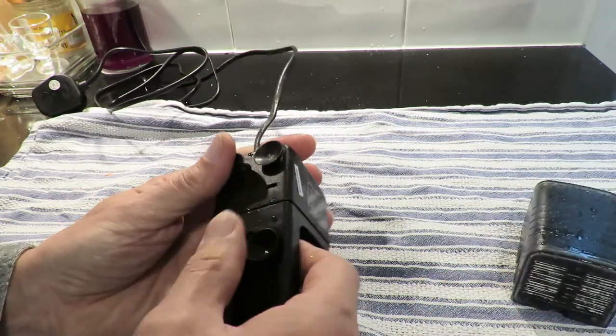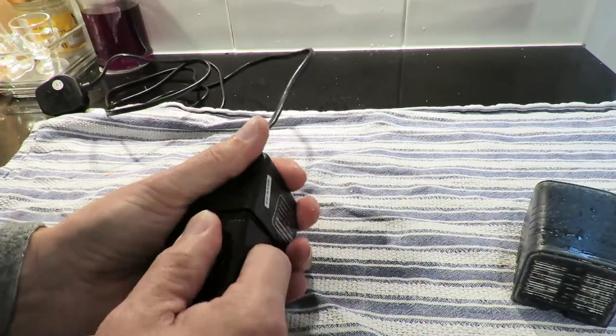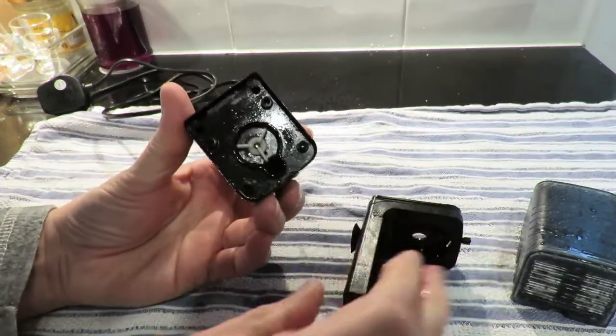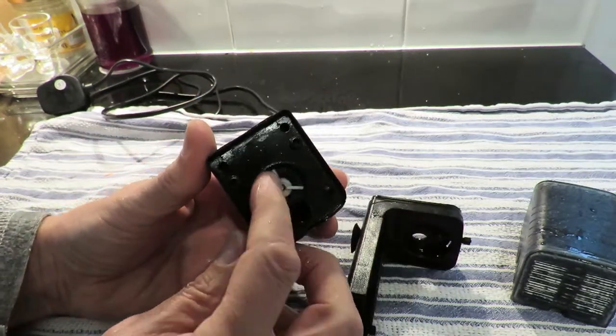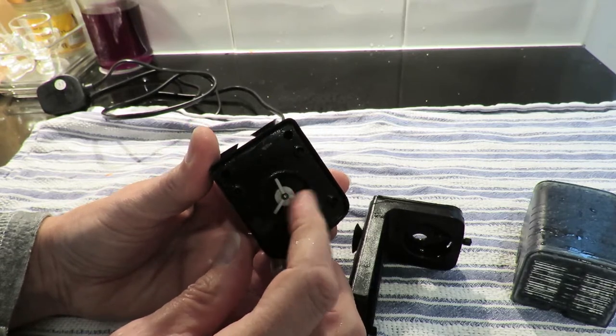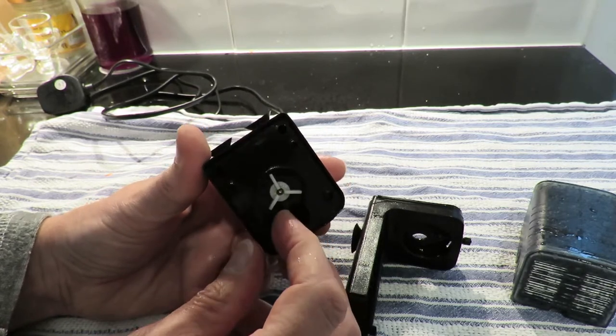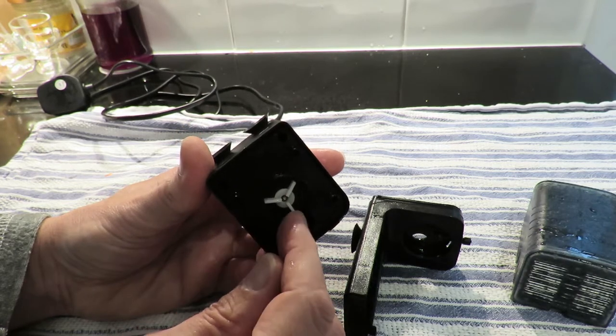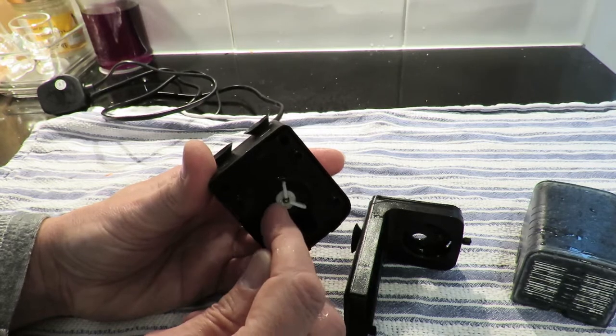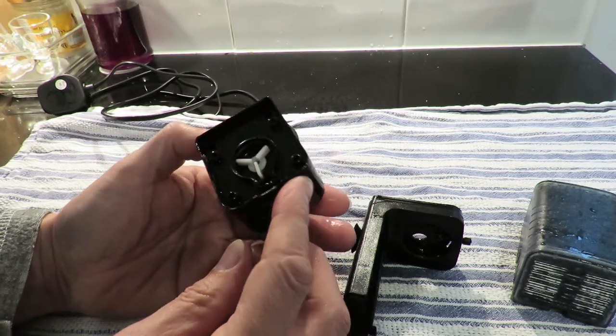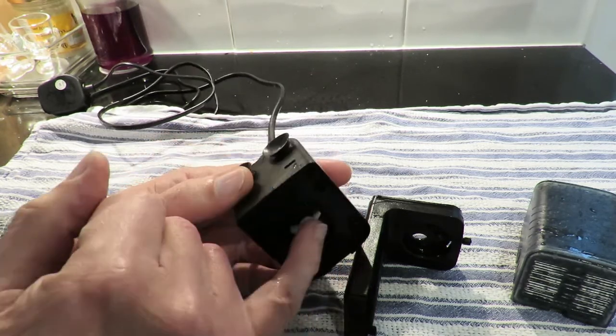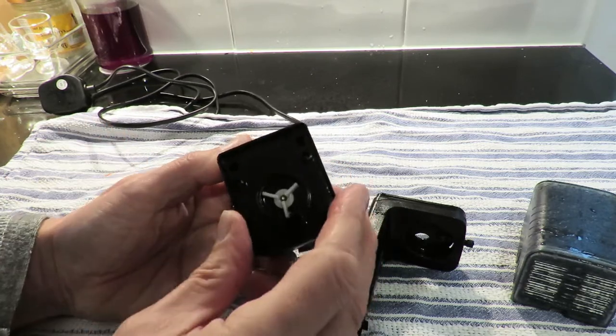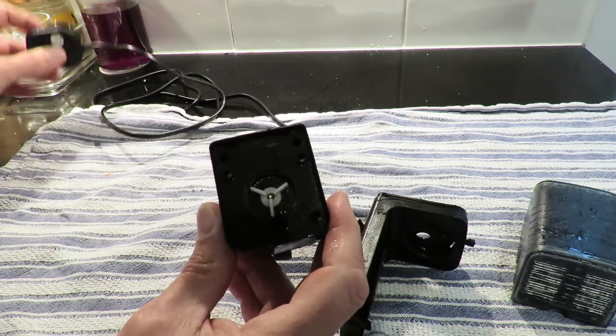Now the next bit of disassembly. I think that looks like that'll pull off there. There we are. So we can see that even easier now. So that's our little motor. I think that's what you call cogging. If you turn it round a bit it flicks to the next position. So that's probably an AC motor. That's interesting. I was hoping it was a little DC motor. Let's just switch that on again.